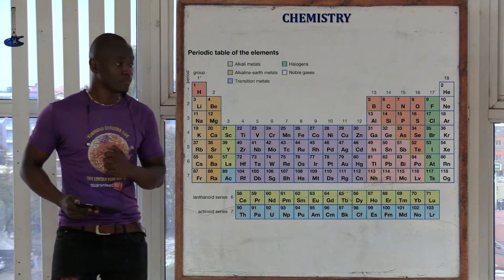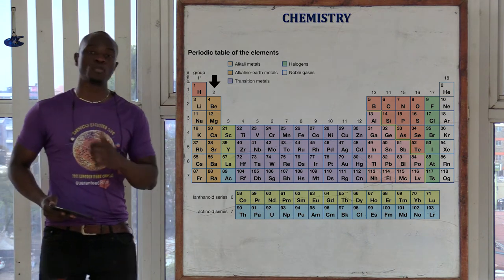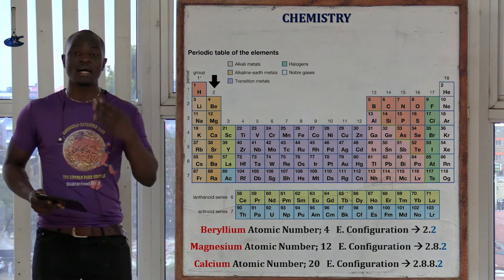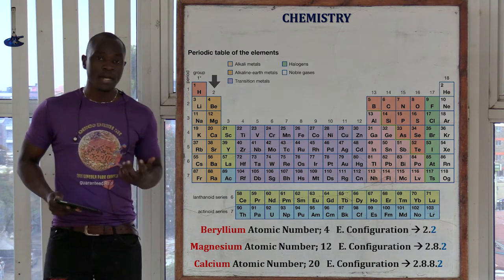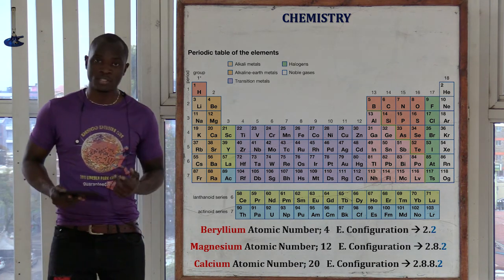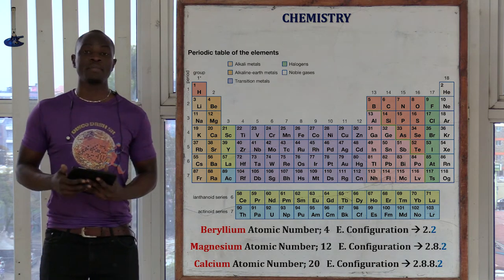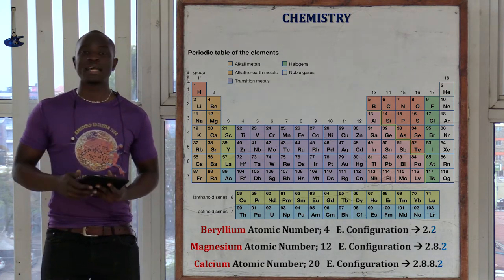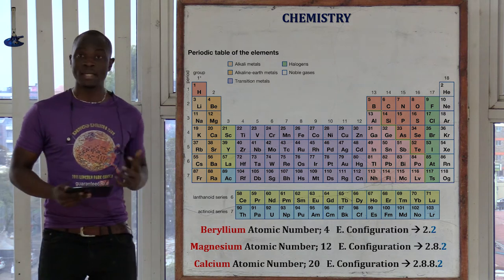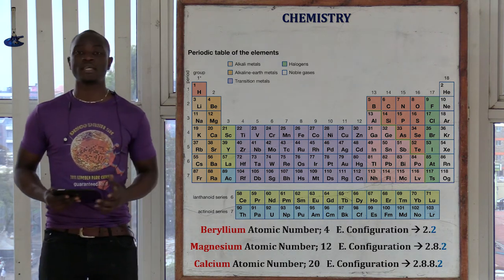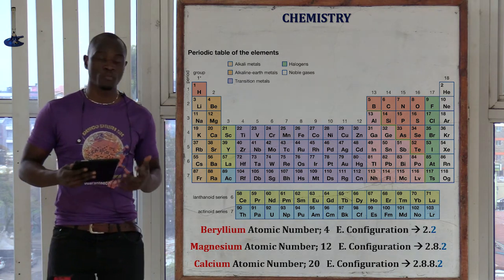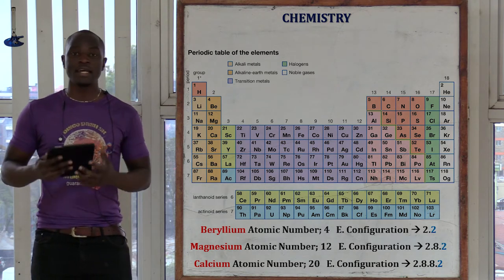The name given to group two elements is the alkaline earth metals. They are group two elements because they have two electrons in the outermost energy level, while group one elements have only one electron in the outermost energy level. Group two includes beryllium, magnesium, and calcium. Since they have two electrons in the outermost energy level, that places them in group two, referred to as the alkaline earth metals.